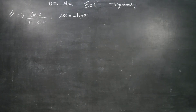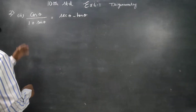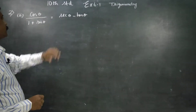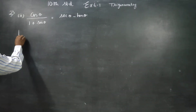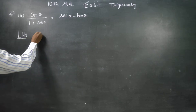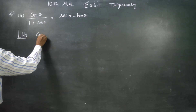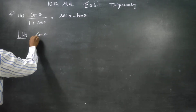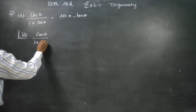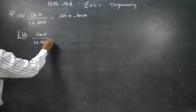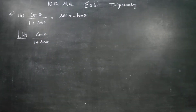Hello, Class 10 standard students. In Exercise 6.1, trigonometry, we have to prove this identity. First, I will start with the LHS. My LHS is cos θ divided by (1 + sin θ) plus cos θ plus 1 plus sin θ.